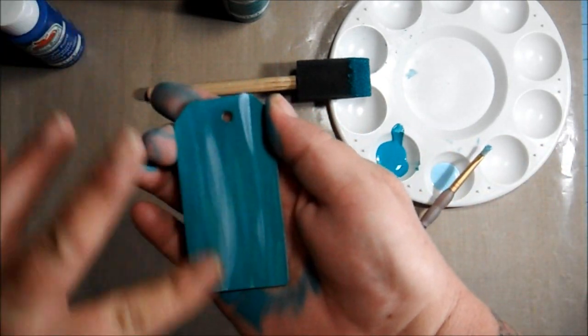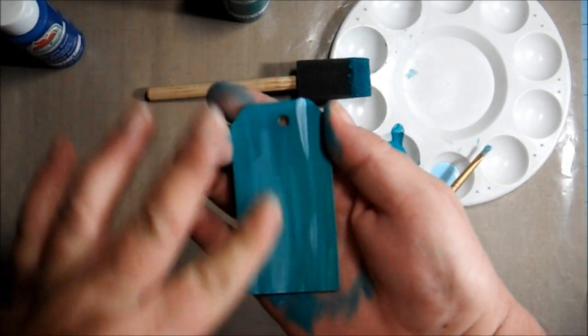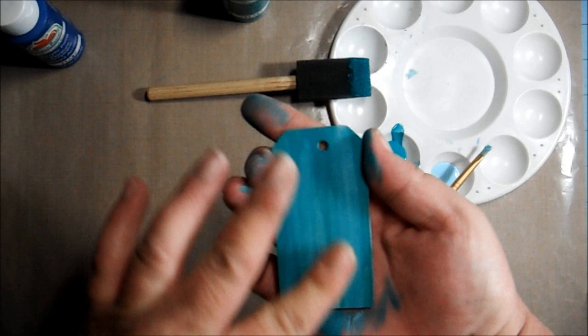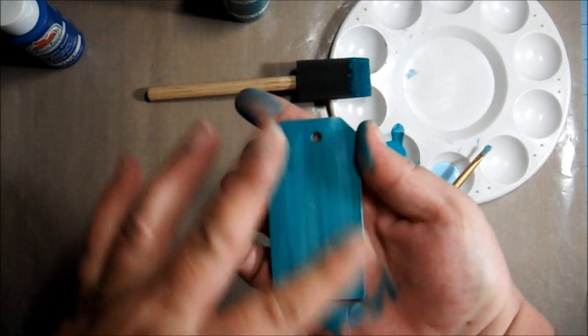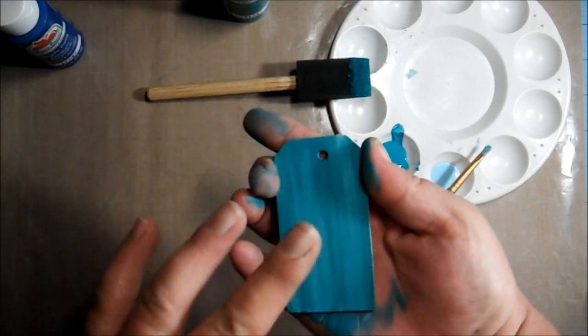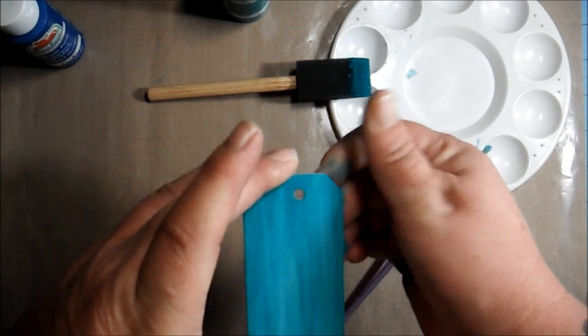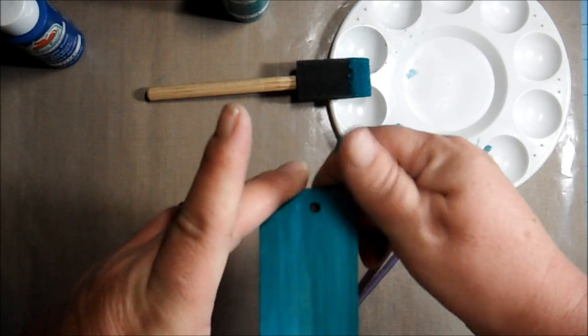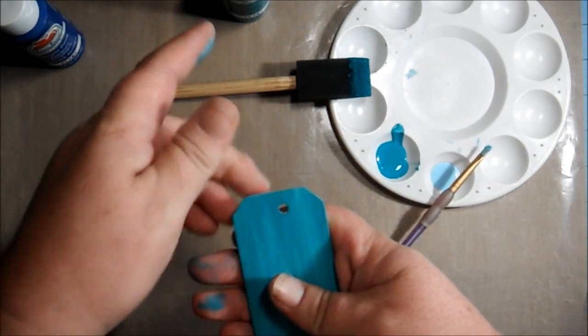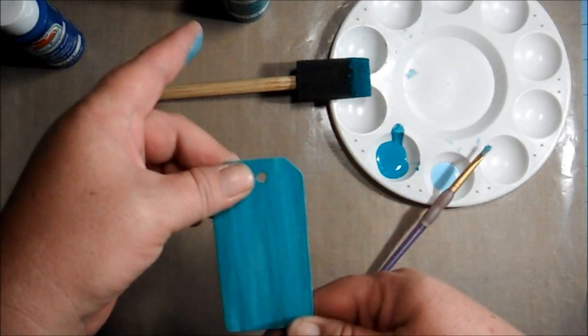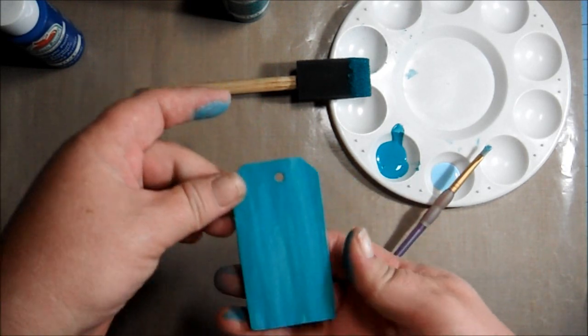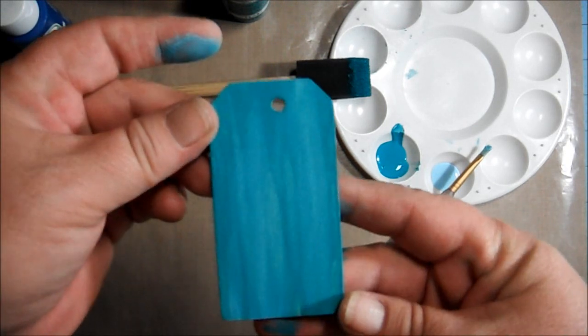So then I'm just going to wipe it off with my finger. Now you can also do this technique. Tanya uses a wet paper towel, I believe, in her tutorial, and I have used that technique before too, and it works great. Depending on how much water is on your paper towel will depend on how much paint you are taking off. So what you're doing is you're just layering paint, basically. You're putting it on, you're taking it off, you're putting it on, you're taking it off.